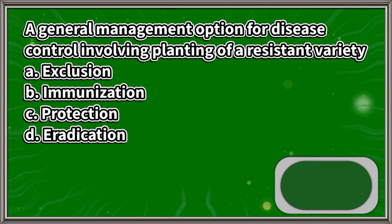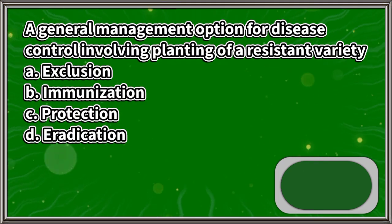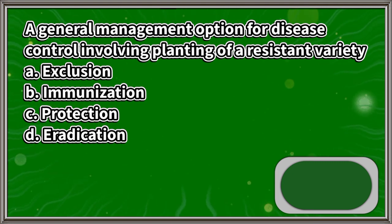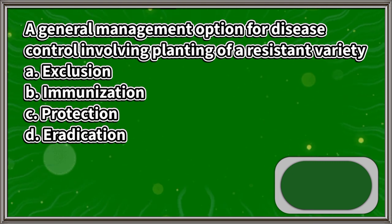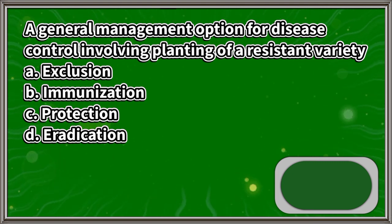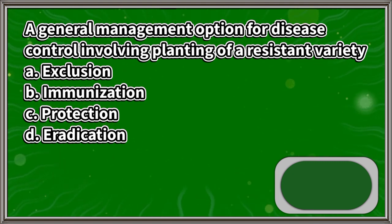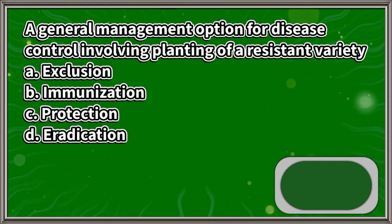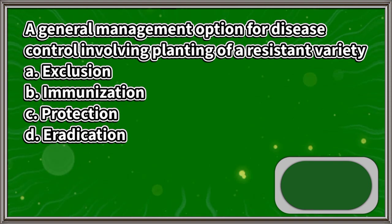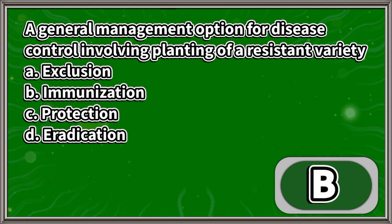A general management option for disease control involving the planting of a resistant variety: A. Exclusion, B. Immunization, C. Protection, D. Eradication. The answer is letter B.